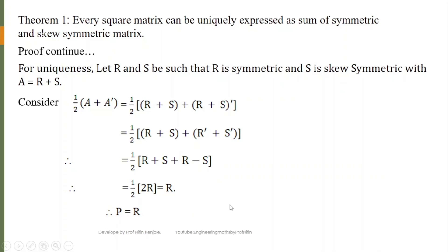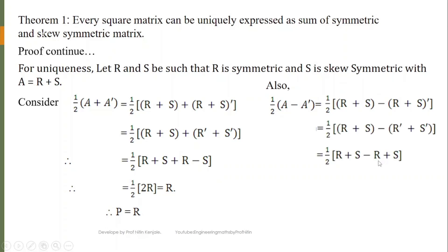Similarly, for uniqueness of Q: we consider Q = (1/2)(A - A^T) and substitute A = R + S. We get (1/2)(R + S - (R^T + S^T)). Since R^T = R and S^T = -S, the -(-S) becomes +S, and the R and -R cancel, giving 2S/2 = S. So Q = S, preserving the uniqueness of Q. Hence every square matrix can be uniquely expressed as sum of a symmetric and a skew-symmetric matrix.